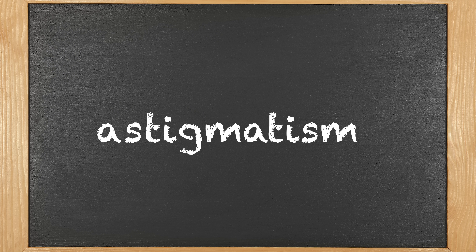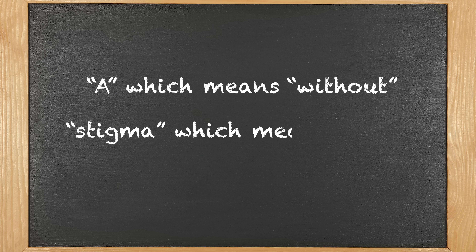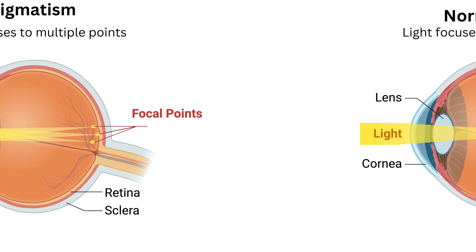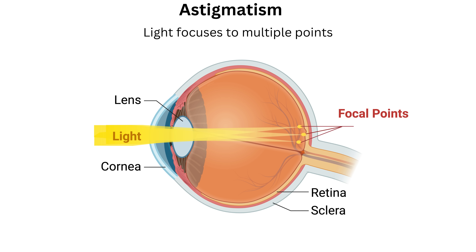The word astigmatism is derived from Latin with 'a' meaning without and then 'stigma' which means point. So it literally translates to without a point. And how this relates to the eyes and how we see is that in a perfect world, all light would focus to a single point inside of the eye. But with astigmatism, light doesn't focus to one single point.